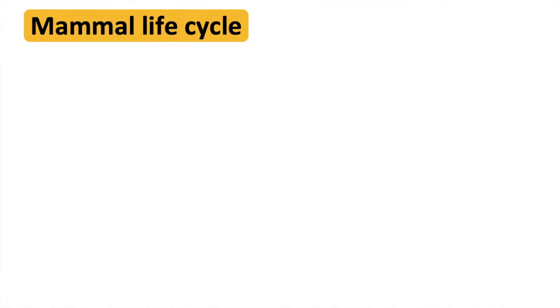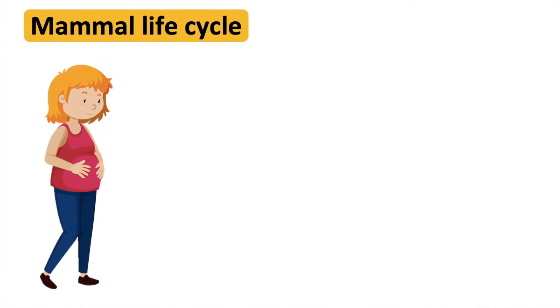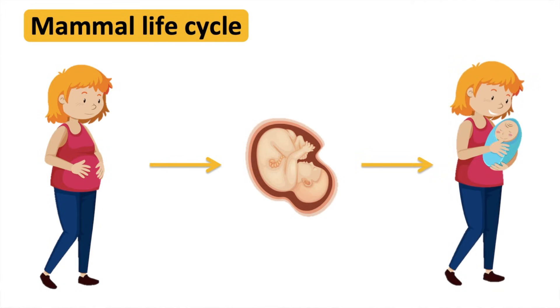Mammal life cycle. This takes place inside the body of a female. A fertilized egg develops into an embryo and then a fetus. The female then gives birth to the baby. A human baby then goes through the life stages of childhood, adolescence, adulthood, and then old age.